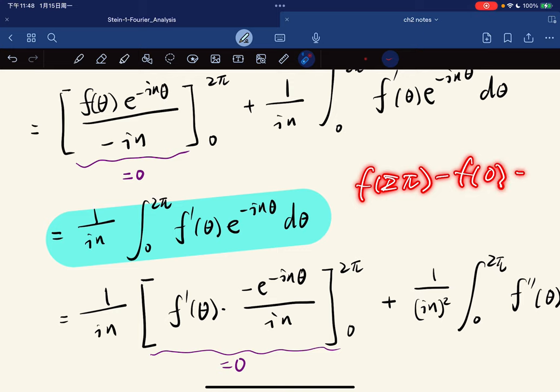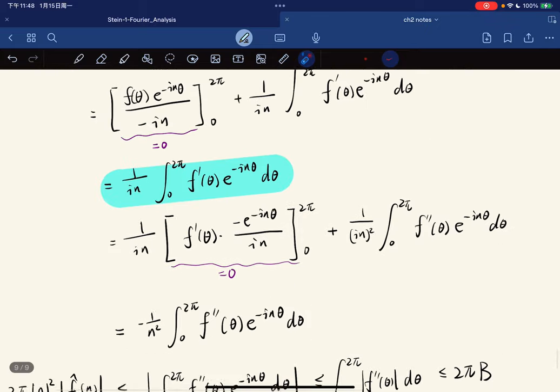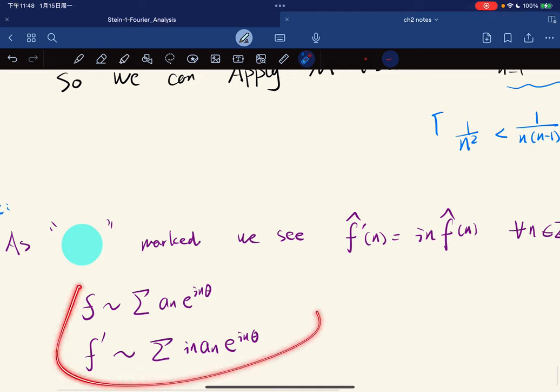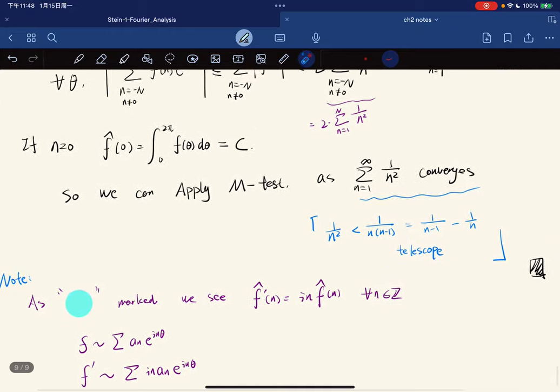But it's periodic, right? It's on a circle, so it's zero to zero. So it also vanishes. So we got something like, if f is this, then f prime is in times the a_n. That's the end.